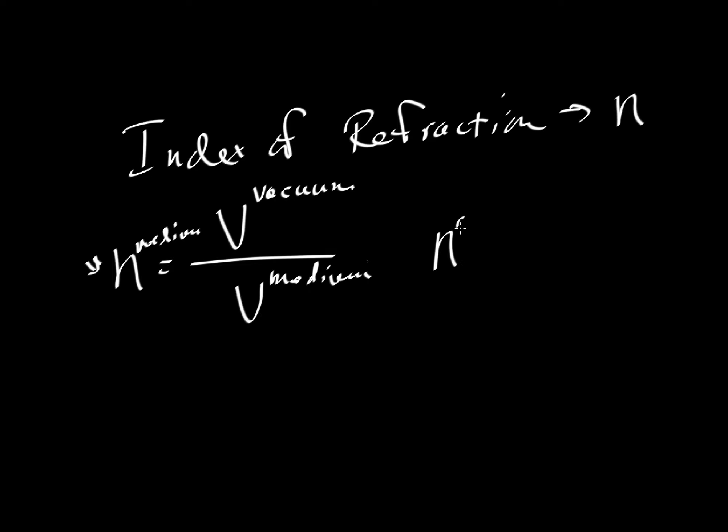So the index of refraction for air would be the velocity of light in a vacuum divided by the velocity of light in air. And it ends up that this value is very close to 1. It's 1.000274 or thereabouts. There are no units on it because we're dividing units of velocity by velocity, so the units cancel out.